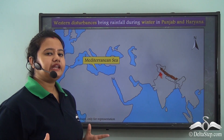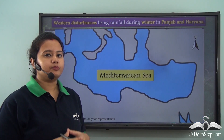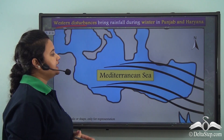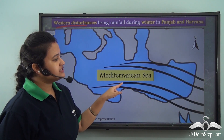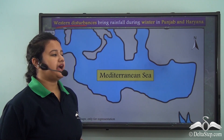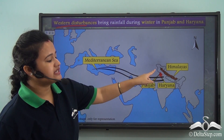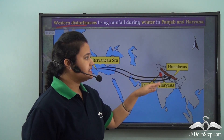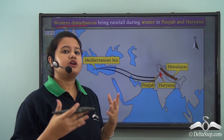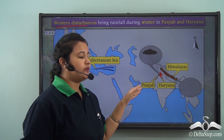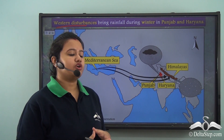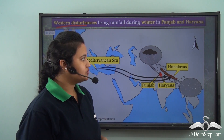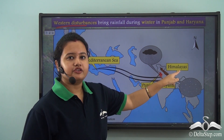Rain in winter is also brought by western disturbances that originate in the Mediterranean Sea and blow eastwards towards India. As they intersect the Himalayas, they cause rainfall in the northwestern states of India like Punjab and Haryana, and snowfall in the Himalayan region.